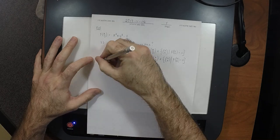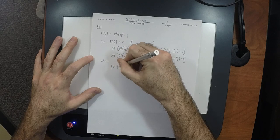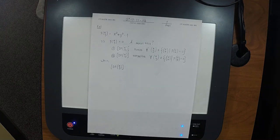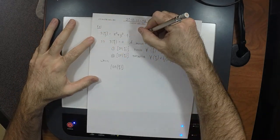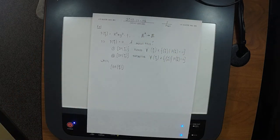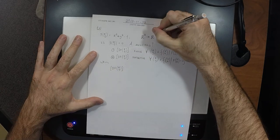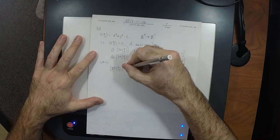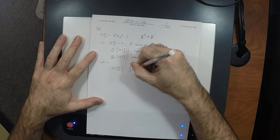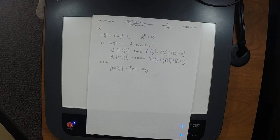To answer part one: can we compute the derivative? It does exist — this is a polynomial in x and y, it couldn't get any better than that. The signature of F is R2 to R1, so when written as a matrix it should be one row, two columns. So it looks like [2x, 2y], because the first column is the partial derivative with respect to the first variable, and the second column with respect to the second.